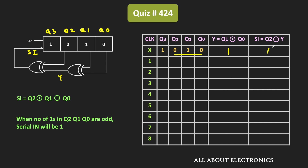At the next clock edge, Q3 becomes same as the serial input, while the remaining three bits get right shifted. So Q2 becomes 1, Q1 becomes 0, and Q0 becomes 1. After the first clock pulse, Q2 Q1 Q0 equals 101. Since the number of 1's in these three bits is odd, the serial input becomes 0. At the next clock edge, this serial input is equal to 0.